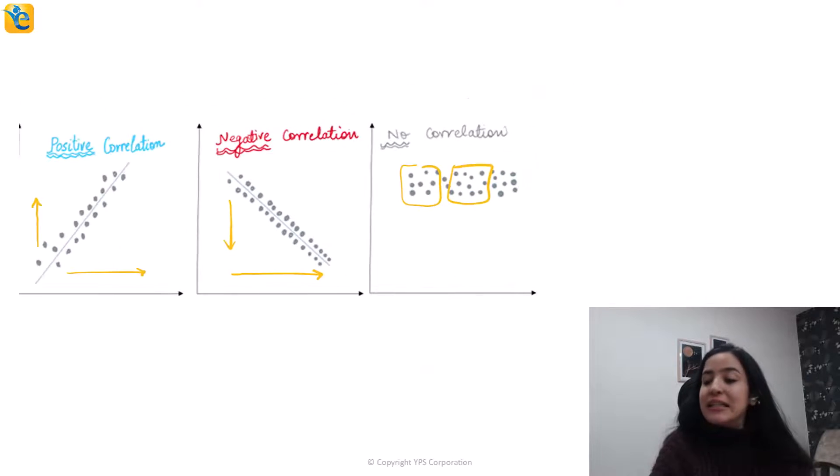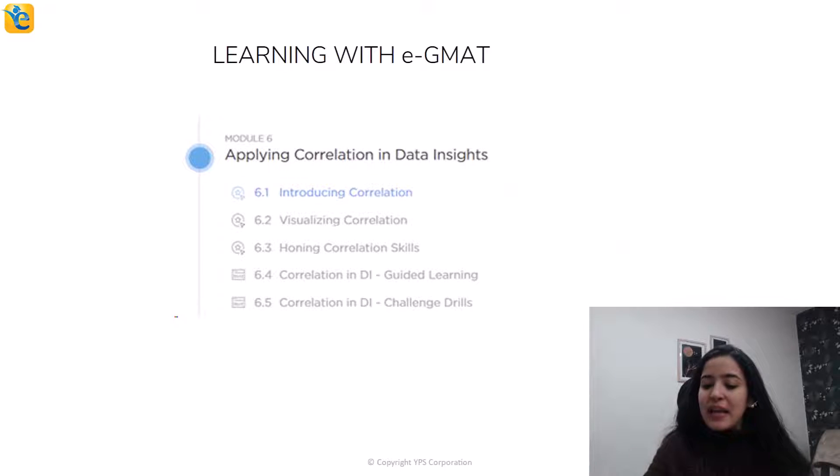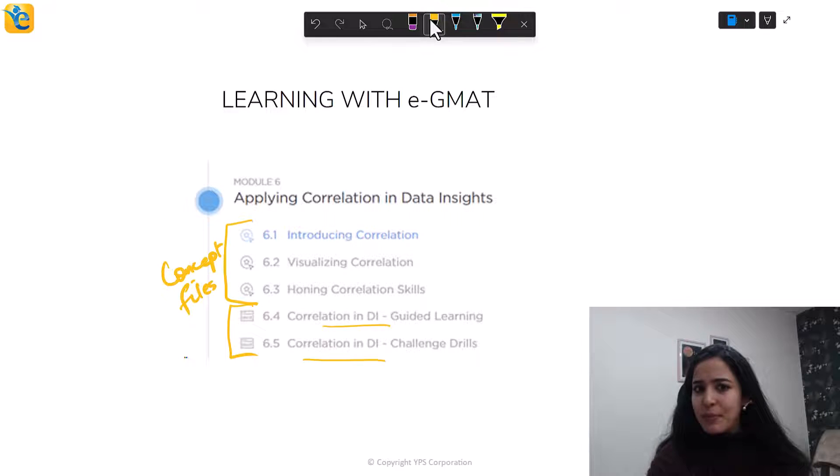EGMAT students learn these concepts in a specialized correlation module. In this one, they learn, they practice, they assess their conceptual understanding thoroughly through three concept files and two application files. If you're interested, we would be glad to talk more about this. Stay tuned, and we'll be back with another video.